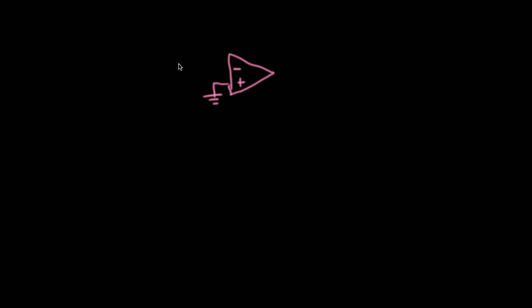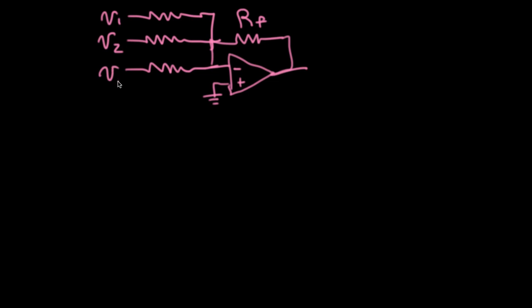The way this is typically framed is that we have a feedback resistor, I'll call this RF, and then we have a bunch of inputs, each of which has its own resistor. So I might have V1, I might have V2, I might have V3, and so on.